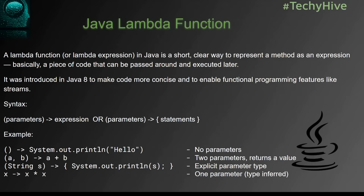An important thing about lambda functions: people think a lambda function is just a shortcut for writing an anonymous class, but this is not true. An anonymous class is created at compile time and the compiler compiles it to bytecode. In the case of a lambda function, when the compiler sees one it uses a different approach called dynamic invocation. With dynamic invocation, the class for the lambda function is created at runtime by the JVM.